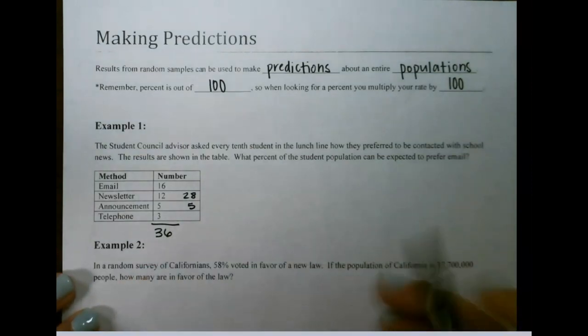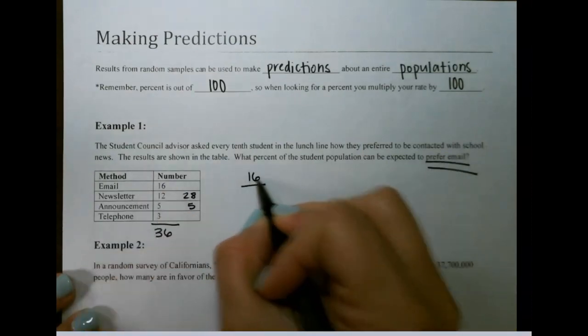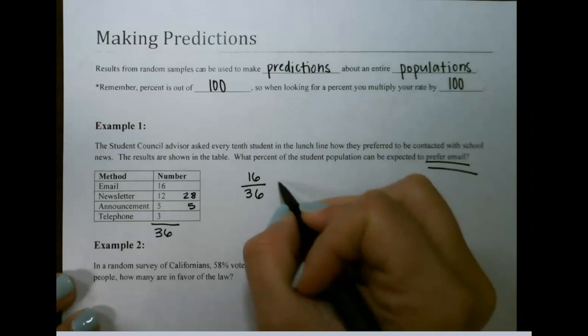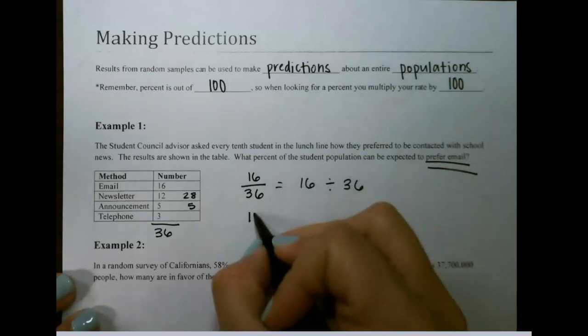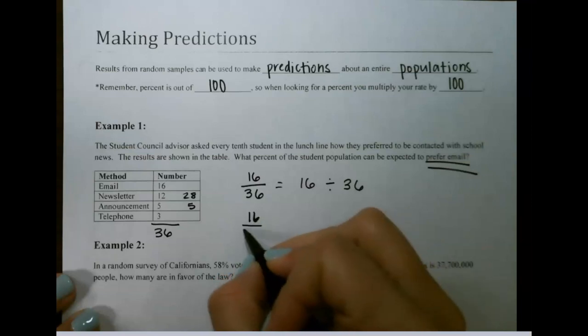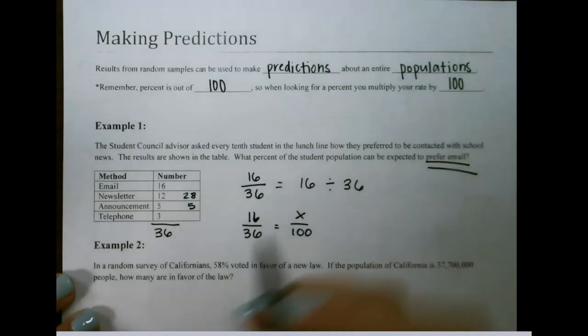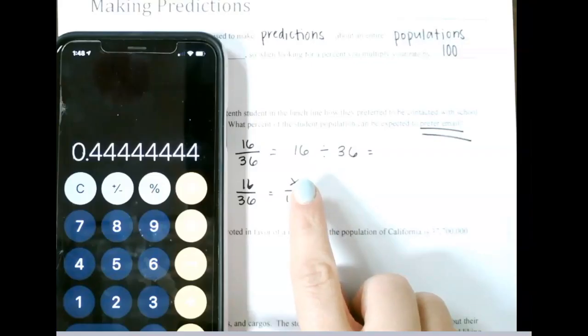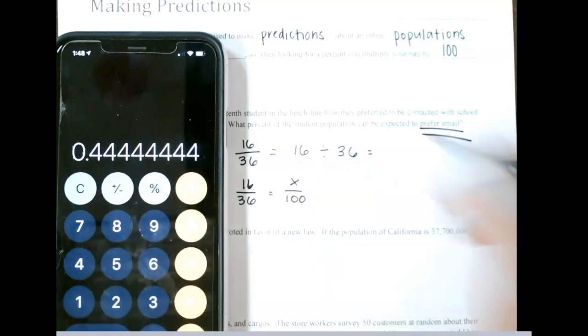If we're looking at preferring email, 16 of those students preferred email. You could simply divide this, or we could set up a proportion. For our first method, if we do 16 divided by 36, that gives us 0.4 repeating.